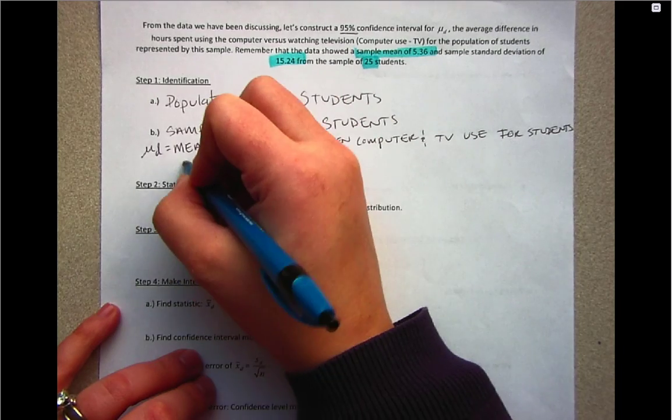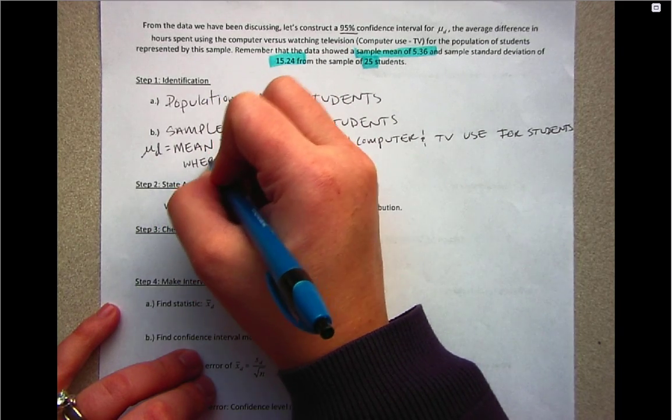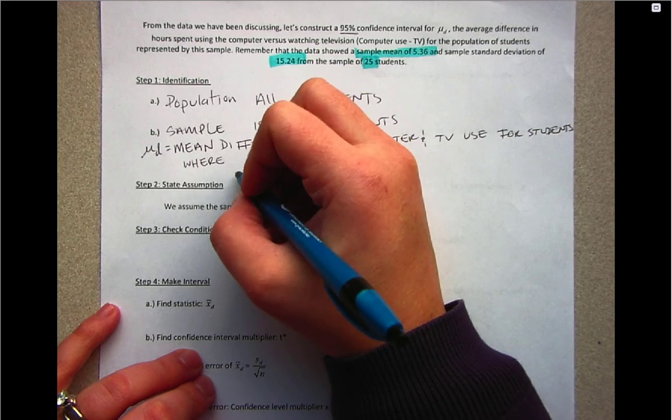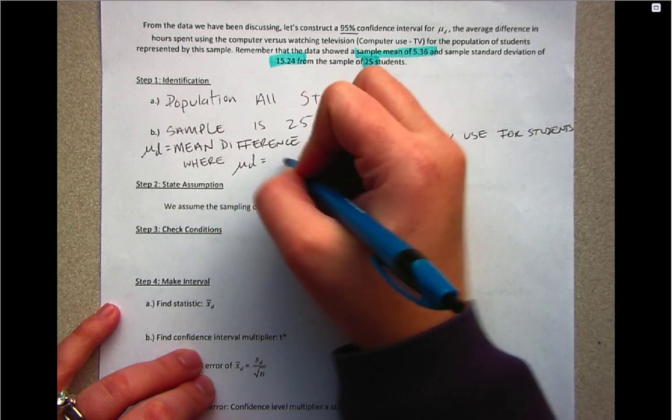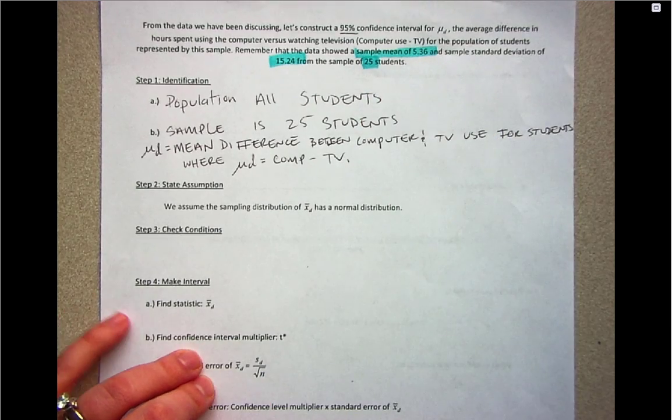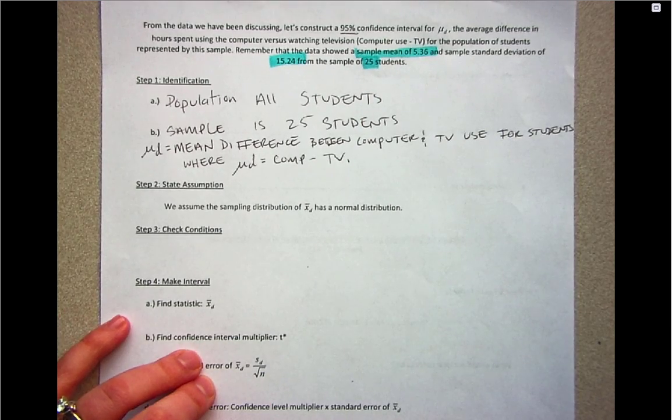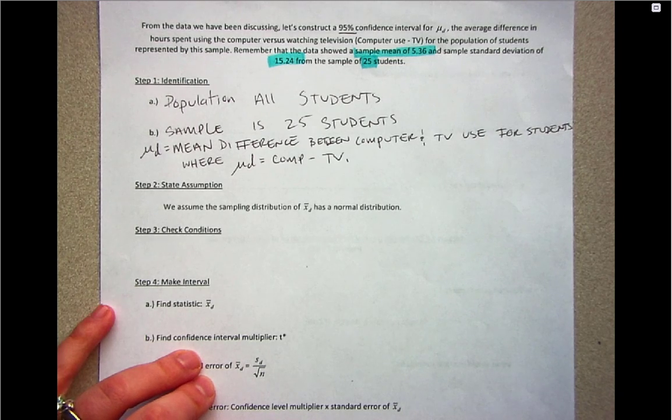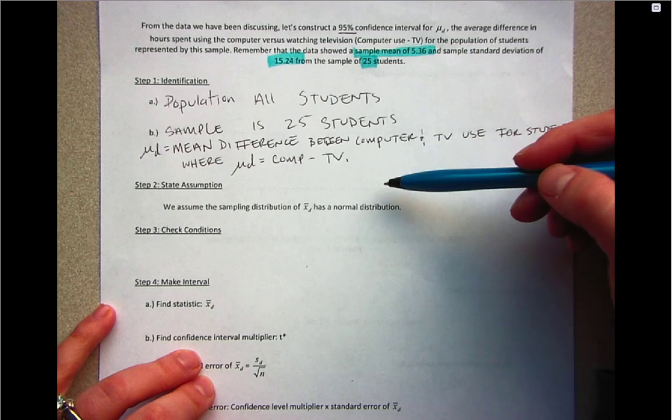Remember, for these problems the direction of subtraction will affect how you interpret your results. We're going to include at the end how our differences were found, because that affects how the confidence interval is ultimately interpreted.